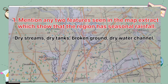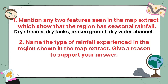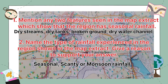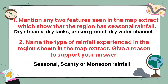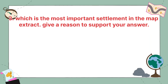Name the type of rainfall experienced in the region shown in the map extract and give a reason to support your answer. The type of rainfall is seasonal, scanty, or monsoon rainfall. The reason is the presence of dry streams, dry tanks, and broken ground.